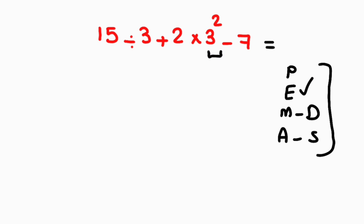Now let's rewrite the expression: 15 divided by 3 plus 2 times 3 to the power of 2 gives us 9, minus 7.